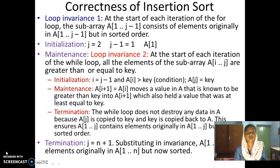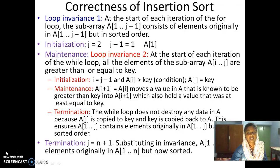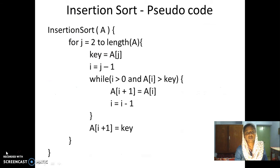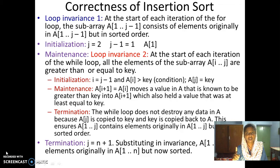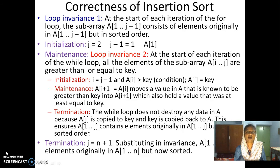Initialization proves the invariance before starting the loop. In our case, we start the for loop with j equal to 2, so when j equals 2, j minus 1 will be 1, giving us a[1] to a[1] — just one element. That one element is actually the element which was originally in a[1], and we consider a single element as sorted. That is the initialization step.